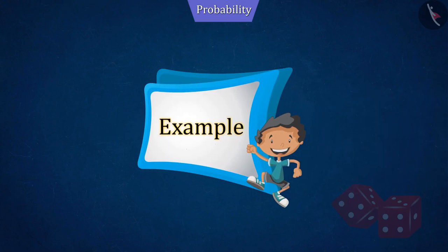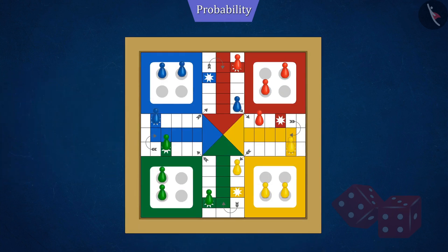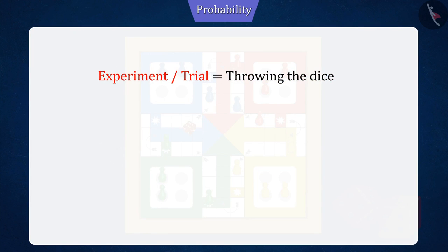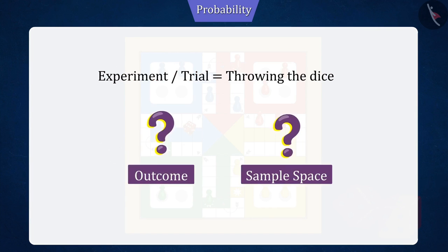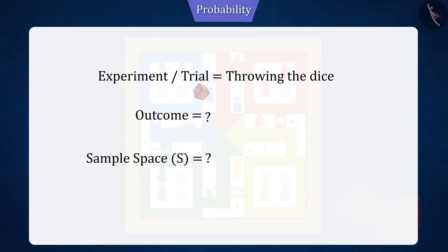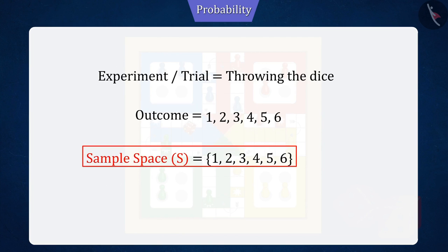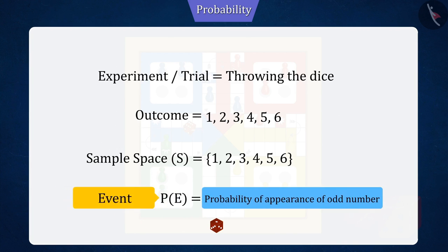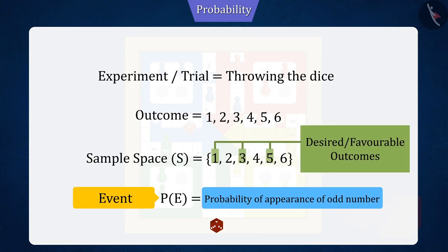Let's see another example. You must have played Ludo at some time. In the game of Ludo, we roll a dice. If it is said that rolling a dice is an experiment, can you tell the outcome and sample space for it? You can pause the video and try. For an experiment of rolling a dice, this will be the outcome, and set S will be the sample space. If we want to find the probability of an odd number appearing when the dice is thrown, then the appearance of an odd number when the dice is thrown is an event, for which 1, 3, and 5 will be the desired or favourable outcomes.